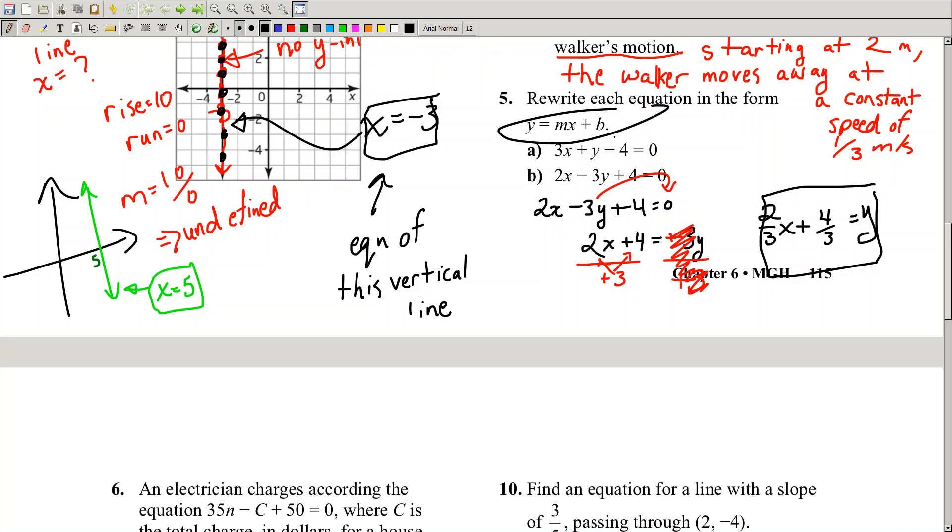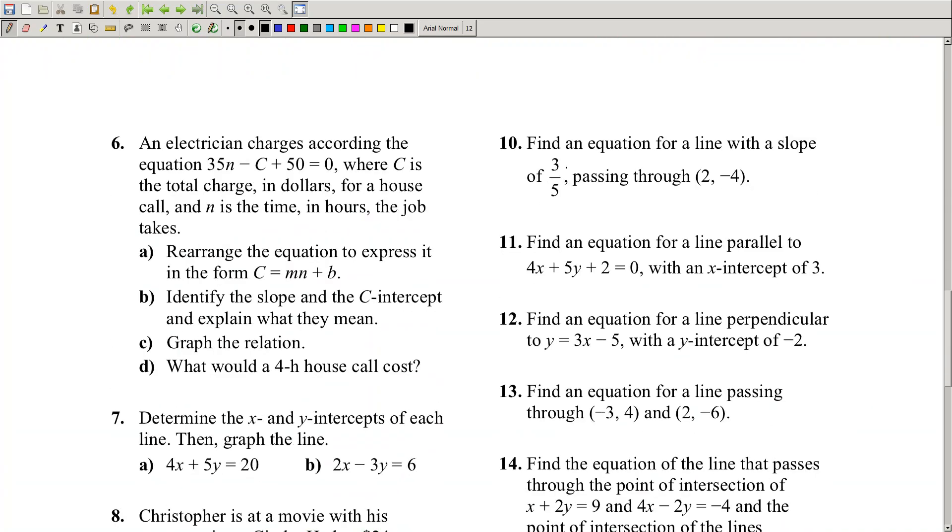I've got y equals 2 over 3x plus 4 over 3. That's in y equals mx plus b form. Remember, y equals mx plus b form means that y is isolated. Y is on its own with nothing else. So that is how you rewrite an equation in the form y equals mx plus b. While we're at it, why don't we do a word problem?